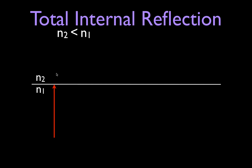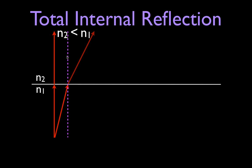If the light strikes the boundary at a 90 degree angle, it just travels straight across and enters the other material at an angle of 90 degrees to that boundary. But if the light strikes that boundary at an angle, it's not going to travel straight across. From Snell's Law, when it travels across that boundary into a material with a lower index of refraction, it's going to be bent away from the normal line. So the angle of refraction is going to be greater than the angle of incidence.